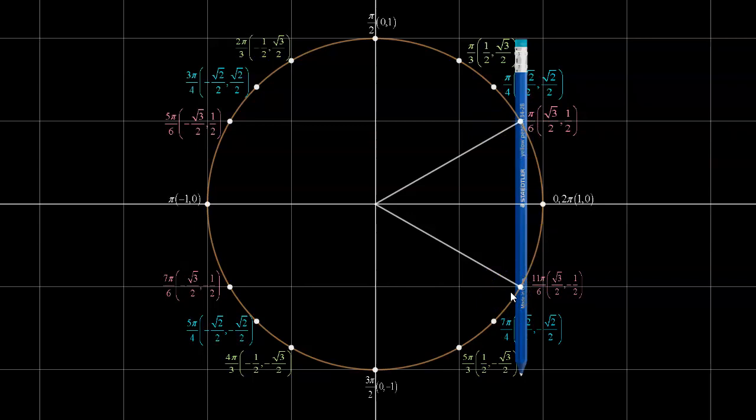I apologize, I didn't render this unit circle in terms of degrees as well as radians, just radians, so I'm just kind of converting on the fly. So the answer to that would be 30 degrees and 330 degrees.